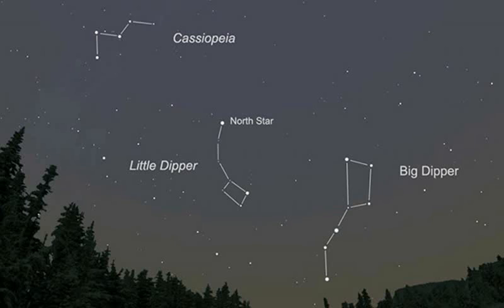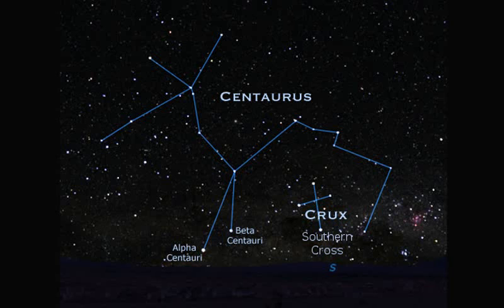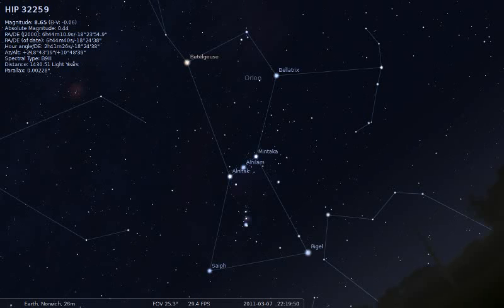But in the Southern Hemisphere, these constellations cannot be seen at all, and different star formations are seen, such as the Southern Cross and Centaurus. And some constellations near the celestial equator, such as Orion, can be seen in both hemispheres.